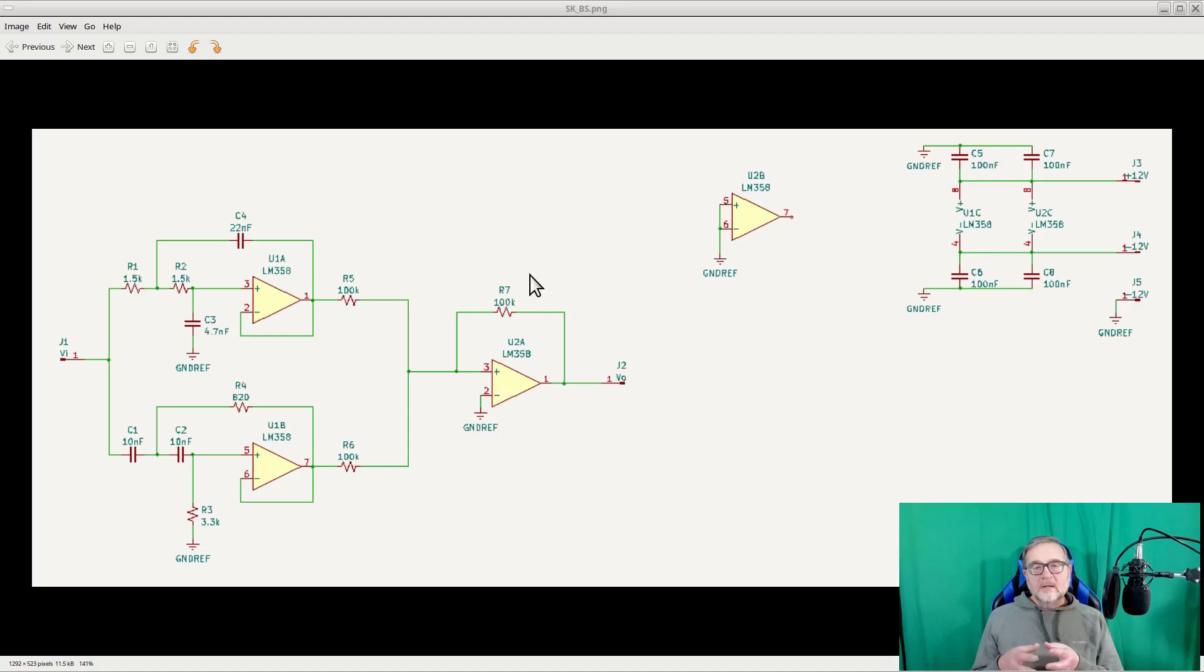If I wanted a different gain, I would just need to change the value of R7, knowing that the gain is given by R7 over R6, which is the same as R7 over R5. The rest of the schematic is pretty much standard.